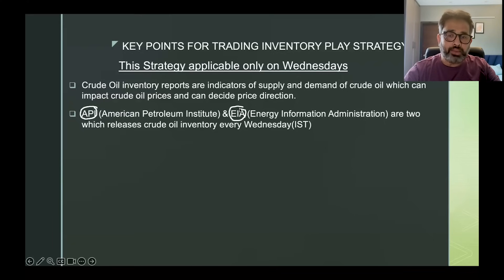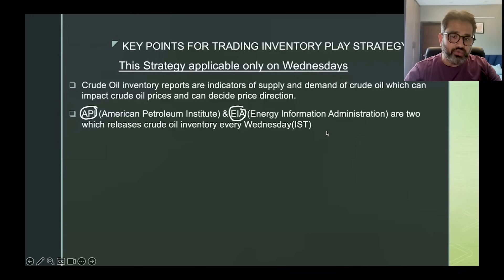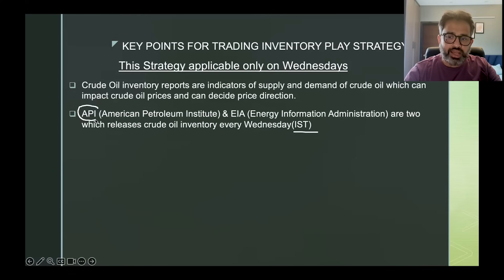There are two agencies that announce inventory data. One is API — American Petroleum Institute — and the second is EIA — Energy Information Administration. These are the two agencies which release crude oil inventory every Wednesday. API is actually released on Tuesday in the US, but because we are ahead of the US in time, in Indian Standard Time it falls on Wednesday.